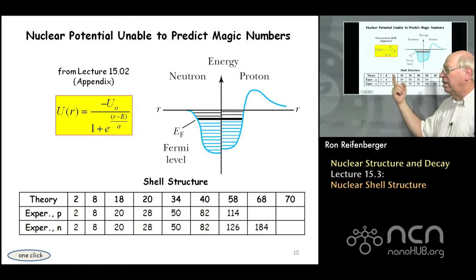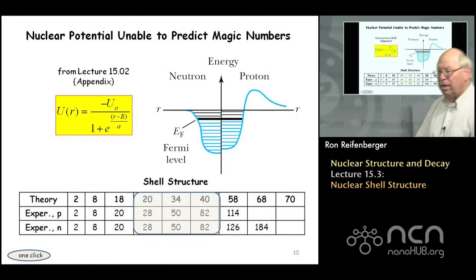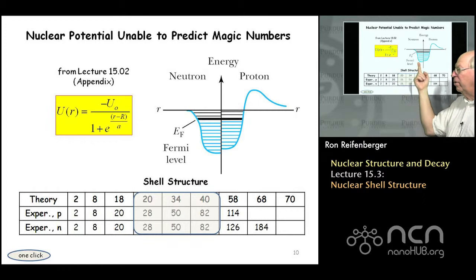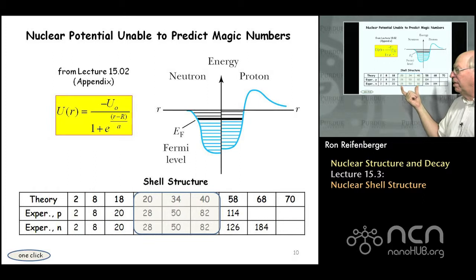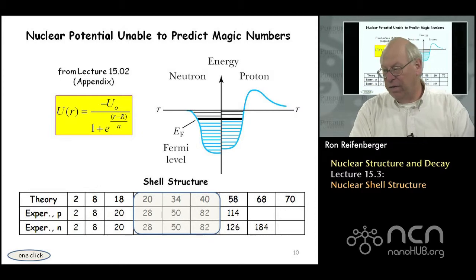From 18 onward things get pretty bad — there's not much agreement. Experimentally we find that nuclei containing 28, 50, and 82 protons and 28, 50, and 82 neutrons are very stable, but this simple model predicts magic numbers of 20, 34, and 40. There is a significant discrepancy, giving some indication that these empirical models, while reasonable for small nuclei, start to fail as the number of neutrons and protons increases beyond roughly 20.